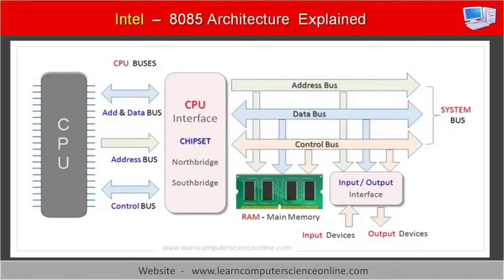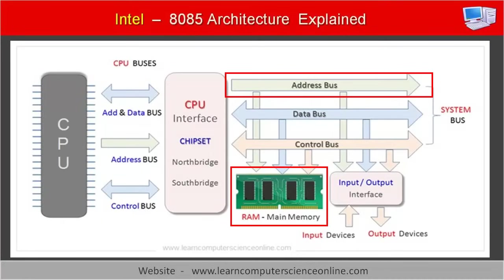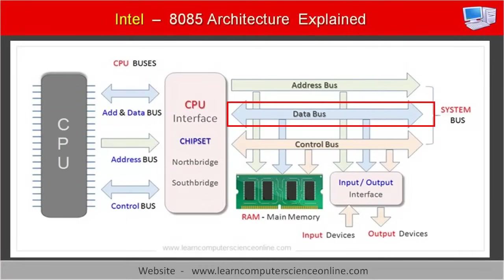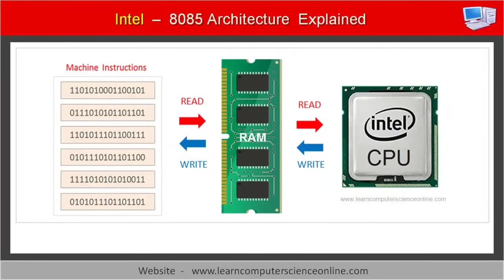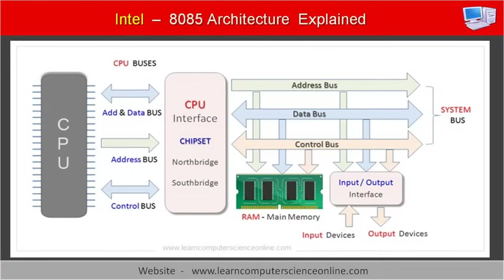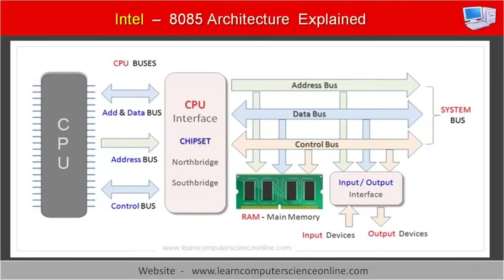There are three types of buses in the 8085 architecture. The address bus is a 16-bit unidirectional bus used to transfer 16-bit addresses between the CPU and main memory, RAM. The data bus is an 8-bit bidirectional bus used to transfer 8-bit data between the CPU and main memory; the CPU performs both memory read and write operations on this bus. The control bus is a bidirectional bus used to transfer control signals between the CPU and the various hardware devices connected to the computer system.